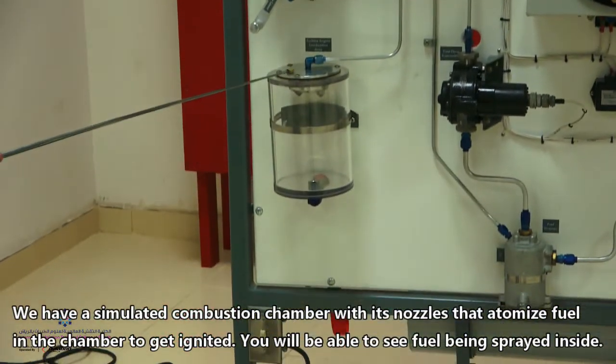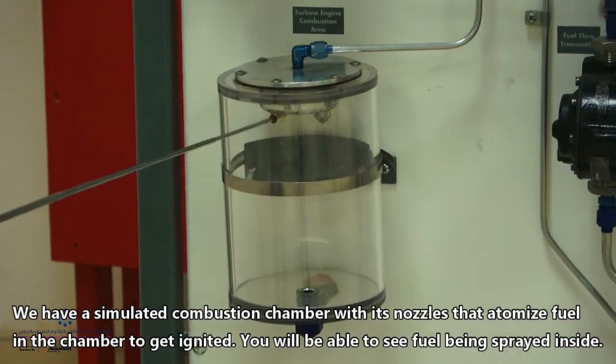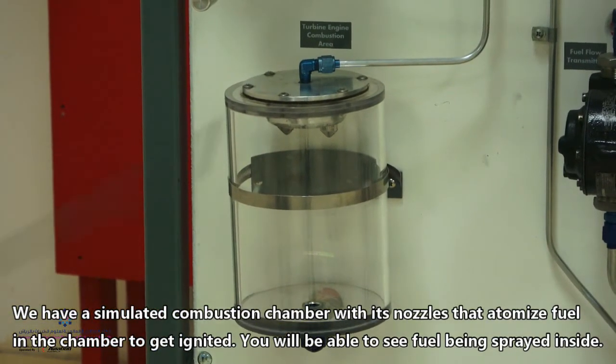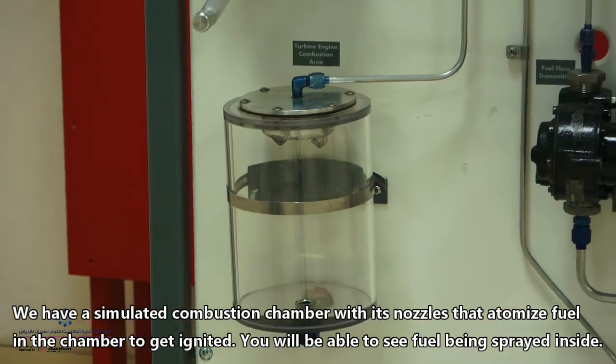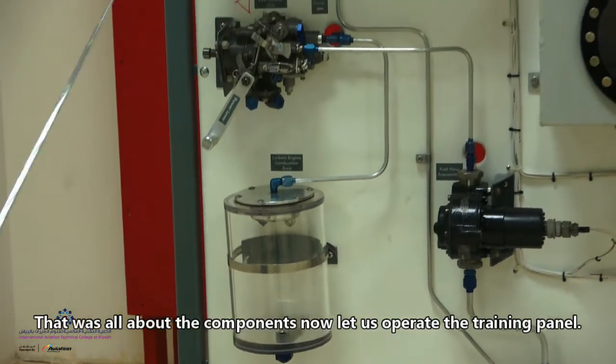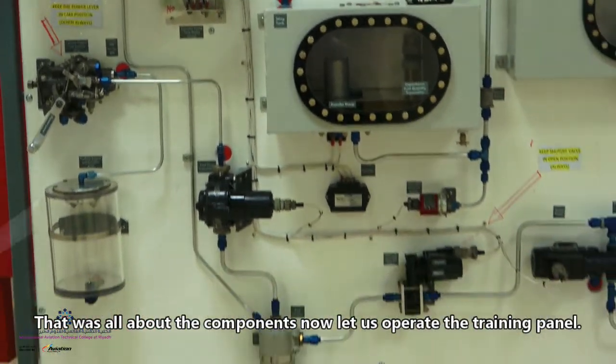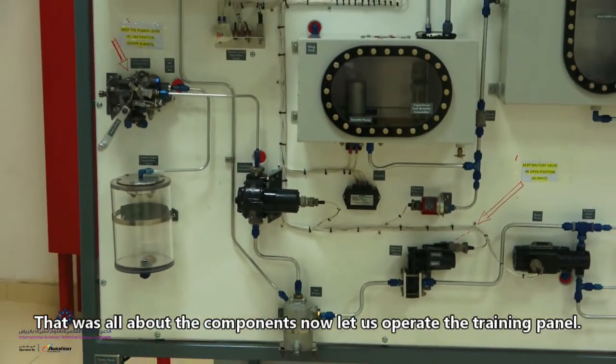And the fuel will go right there to the combustion chamber. As you see, this is a simulated combustion chamber and clearly you can see when the fuel is coming down and it has also a nozzle at the top of it. So this is about the components and then we'll talk about how to operate this training panel.